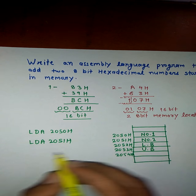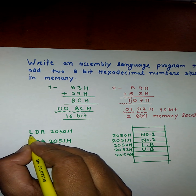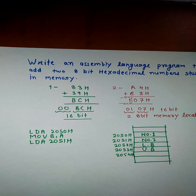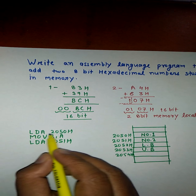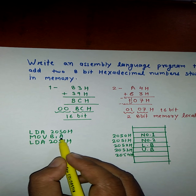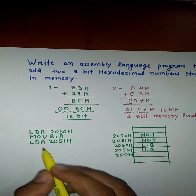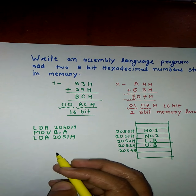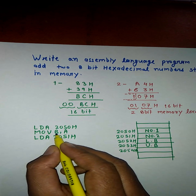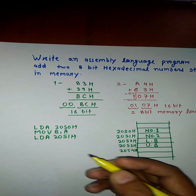If we use these two LDA instructions consecutively, the first number will be overwritten by the second. So before loading the second number, we must store the first number in a safe place. I am going to use register B. After LDA 2050H, we copy the accumulator value to register B using MOV B,A. Now the accumulator is free to be overwritten with the second number.